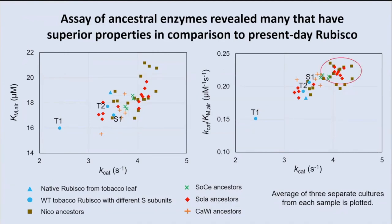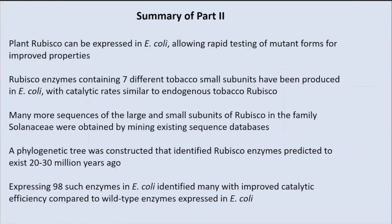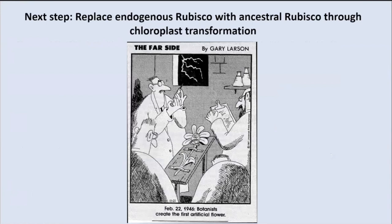To summarize part two: we can express plant Rubisco in E. coli; we studied the endogenous small subunits; Miatt obtained many more large and small subunit sequences, used that to construct a phylogenetic tree, expressed 98 ancestral enzymes in E. coli, and some of these definitely have improved catalytic efficiency. Our next step is to replace the endogenous Rubisco with ancestral Rubisco through chloroplast transformation — that's the project we'll be doing in the coming year. Thank you.